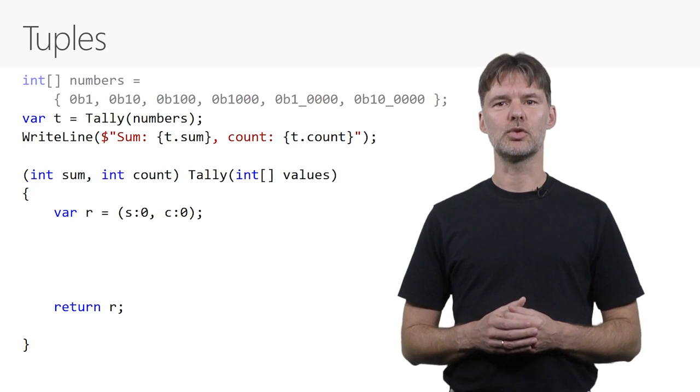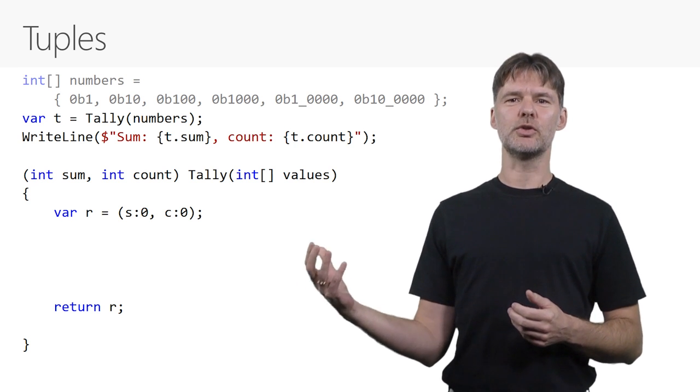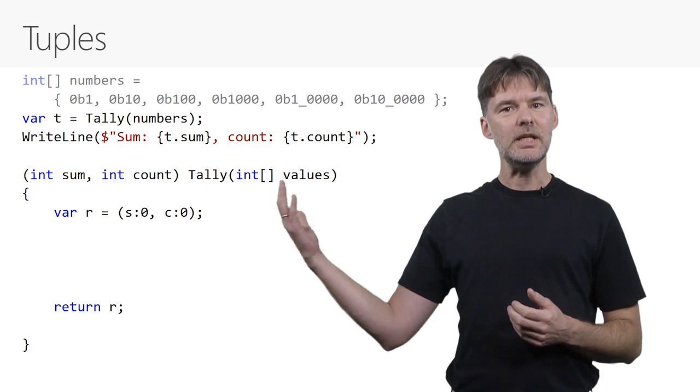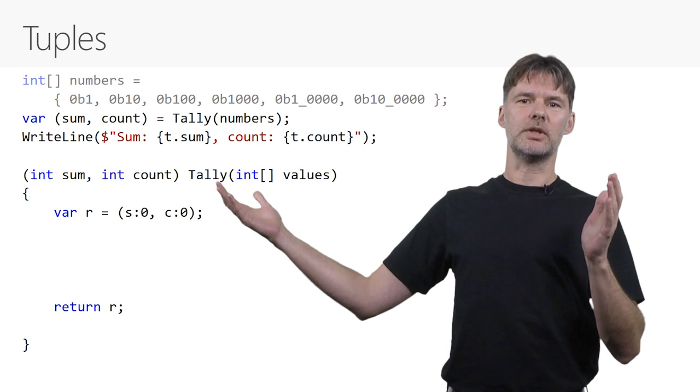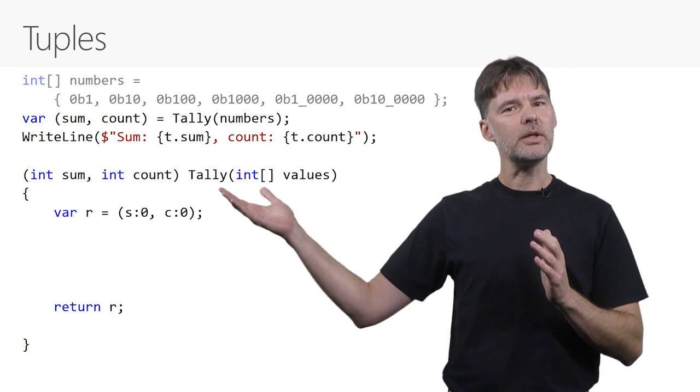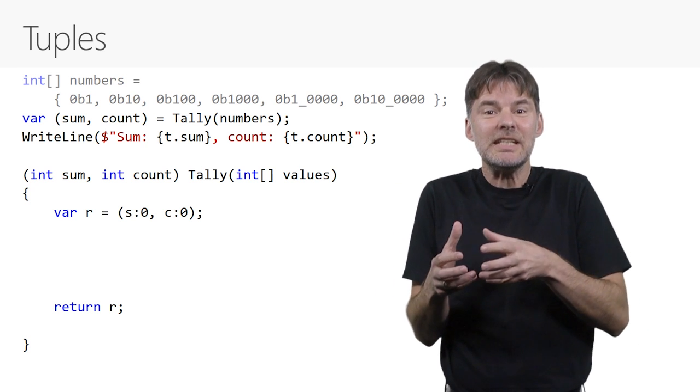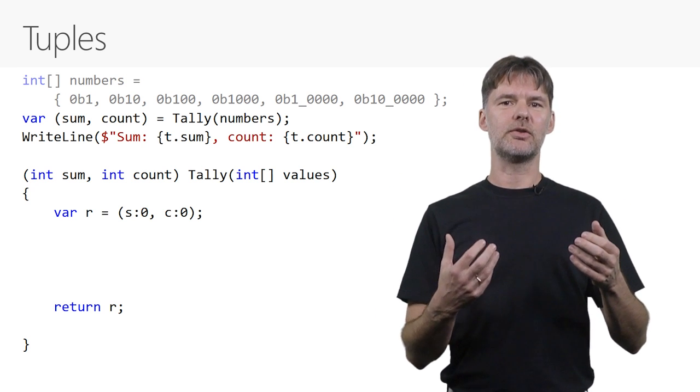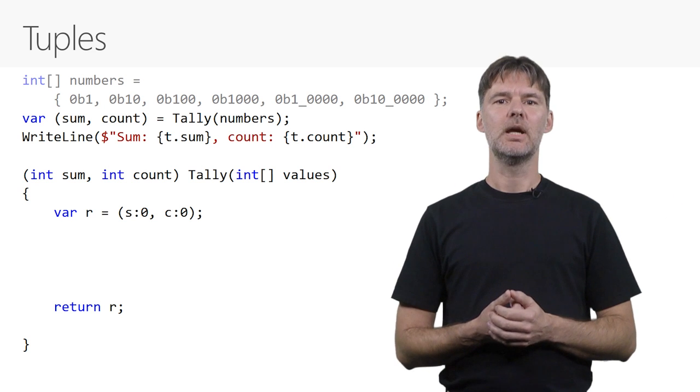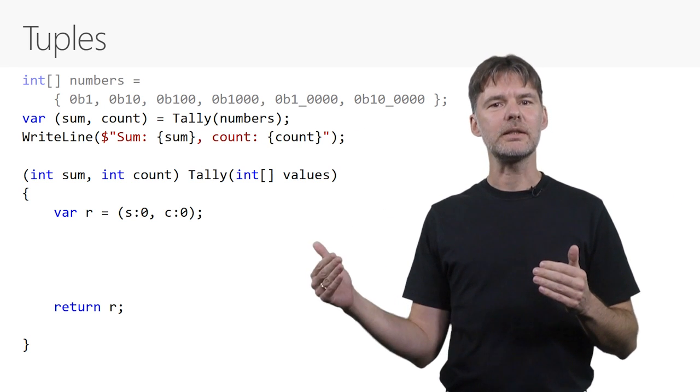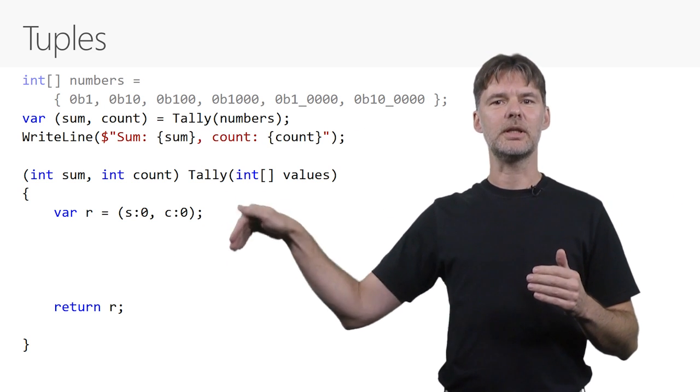A third way to consume a tuple is to not even hold onto the tuple itself, as we do in t here, but to deconstruct it right away. What's going on here is that I declare two new variables, sum and count, and immediately split the tuple into its parts, assigning each to a variable. Now we can use those variables directly in subsequent code.